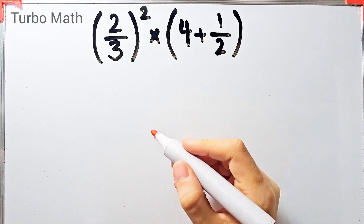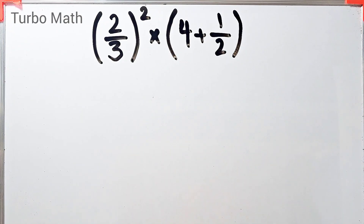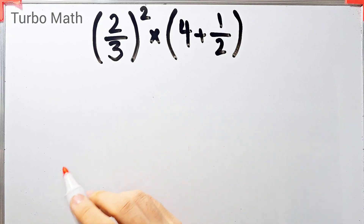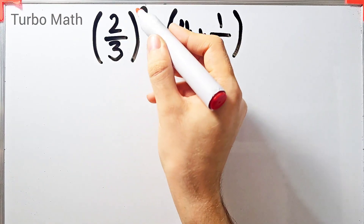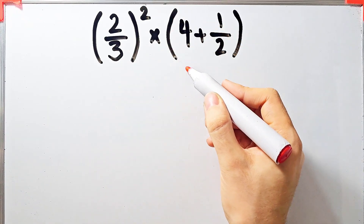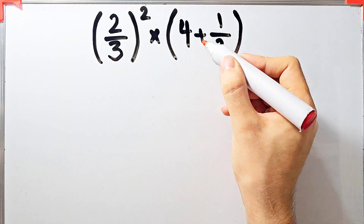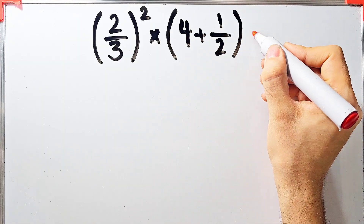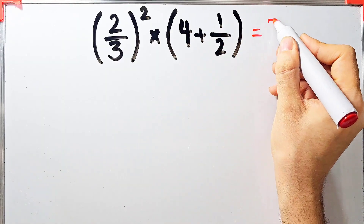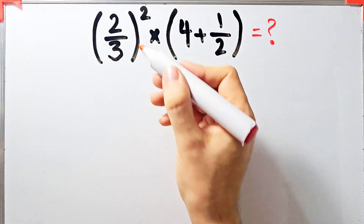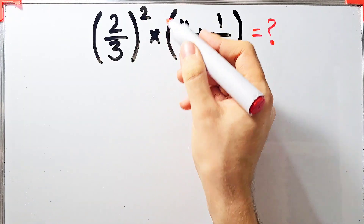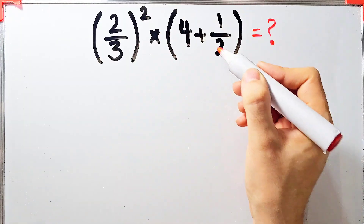Hi friends, welcome to Turbo Math channel. Many people when they see this question don't know which operation to do first, so they often make a mistake. The question is: two over three, all to the power of two, times open parentheses four plus one over two, closed parentheses. In this question we have exponents, multiplication, parentheses, and addition.